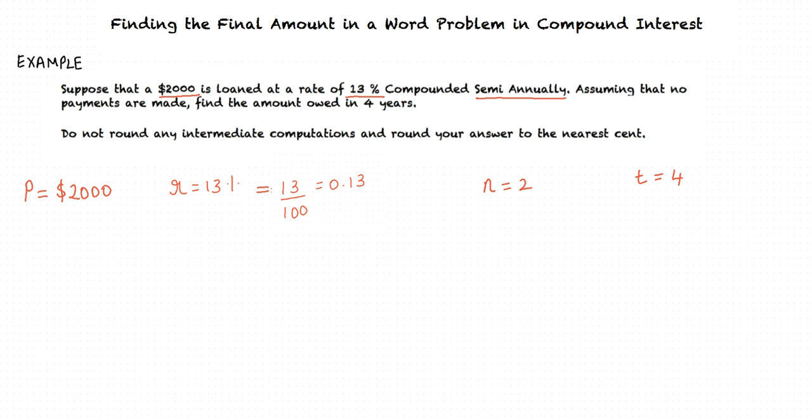The final step would be to substitute in the formula and determine the amount. The formula for compound interest is A equals P times 1 plus r divided by n all raised to the power nt.